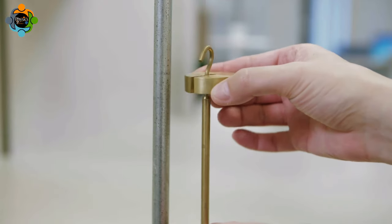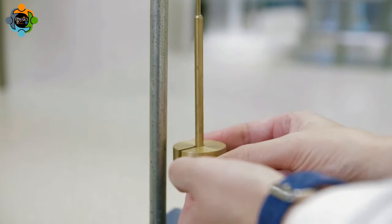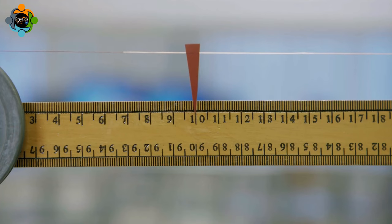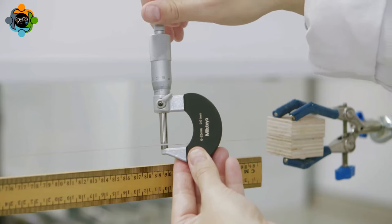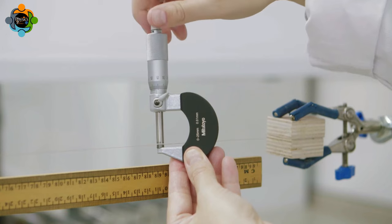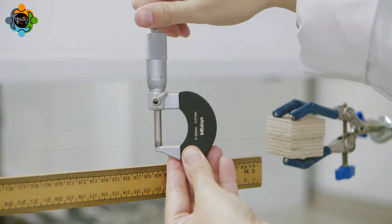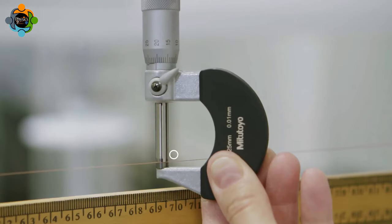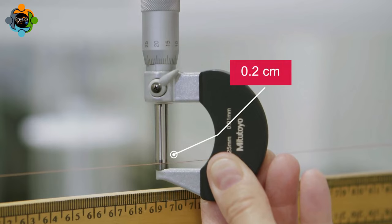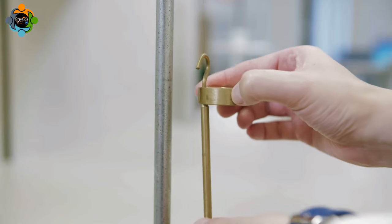A mass is added to the hanger. The extension of the wire is measured. The diameter of the wire is measured at three points along its length using a micrometer. The average diameter is calculated. Additional mass is added.